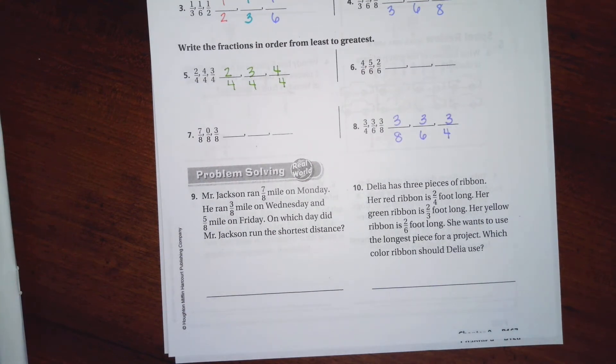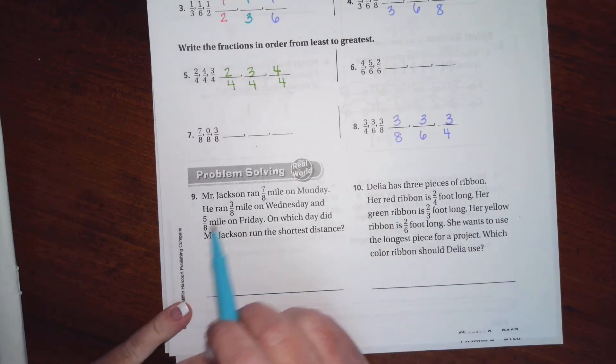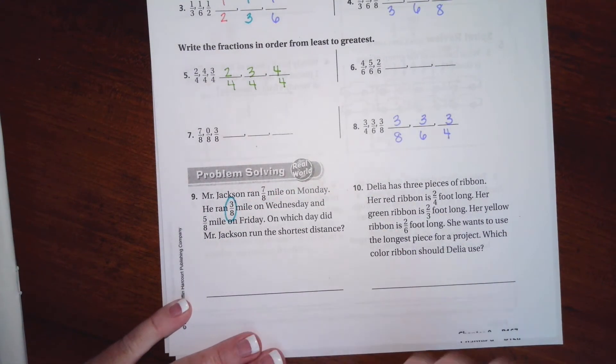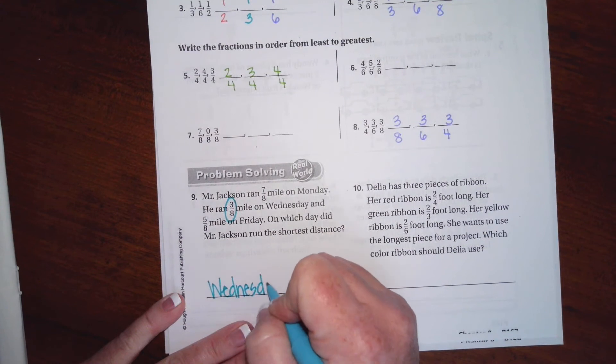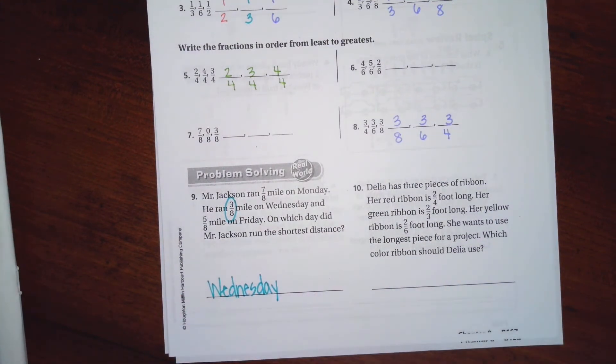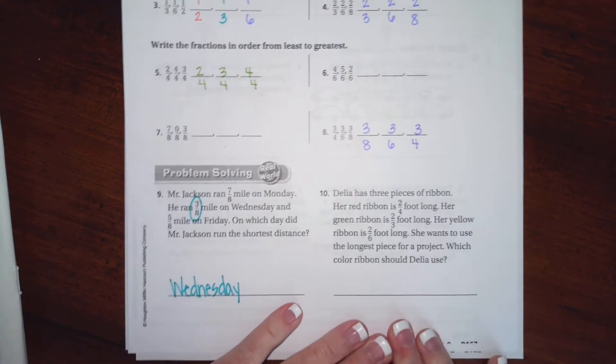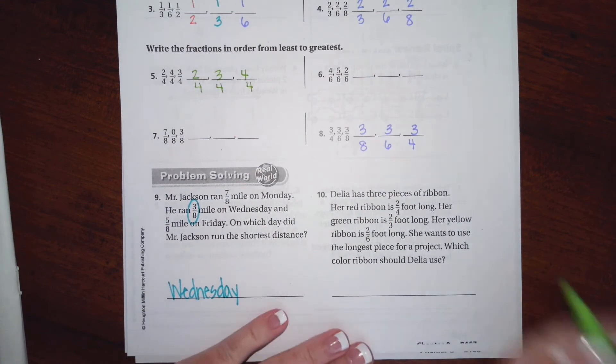All right guys, you guys go ahead and finish up six and seven. You can totally do it, I believe in you. We're going to go down and do number nine. It says Mr. Jackson ran seven-eighths of a mile on Monday, three-eighths of a mile on Wednesday, and five-eighths mile on Friday. Which day did he run the shortest distance? So the bottoms are the same, so we're just looking for the smallest top number. That's going to be there, so on Wednesday, there you go.